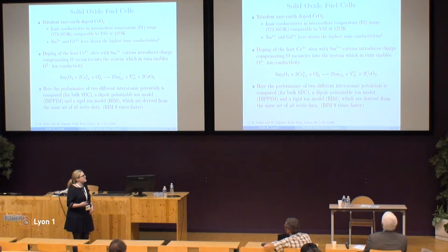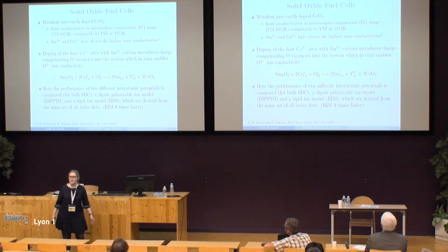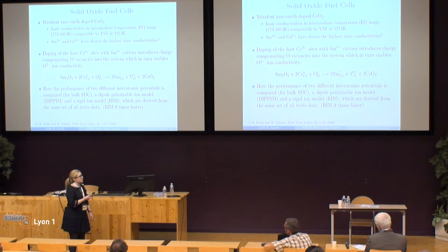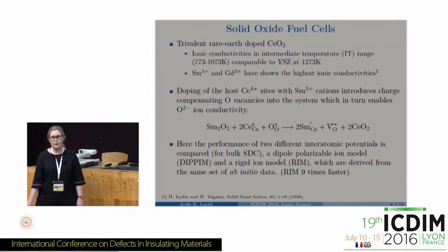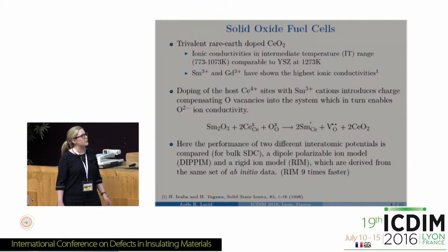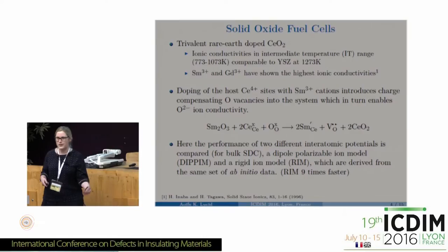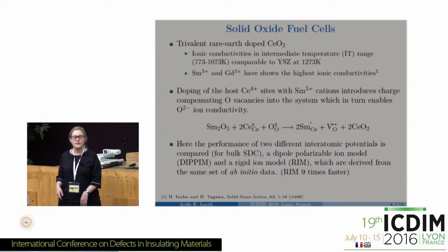For about 30 years, trivalent rare earth doped ceria has been investigated as a potential substitution for yttria-stabilised zirconia. Ionic conductivity comparable to YSZ can be achieved with samarium or gadolinium doped ceria at 773 to 1073 Kelvin, known as the intermediate temperature range. Through a charge compensation mechanism, for every two Sm³⁺ or Gd³⁺ cations one oxygen vacancy is created, and these oxygen vacancies are the charge carriers enabling oxide ion conductivity.